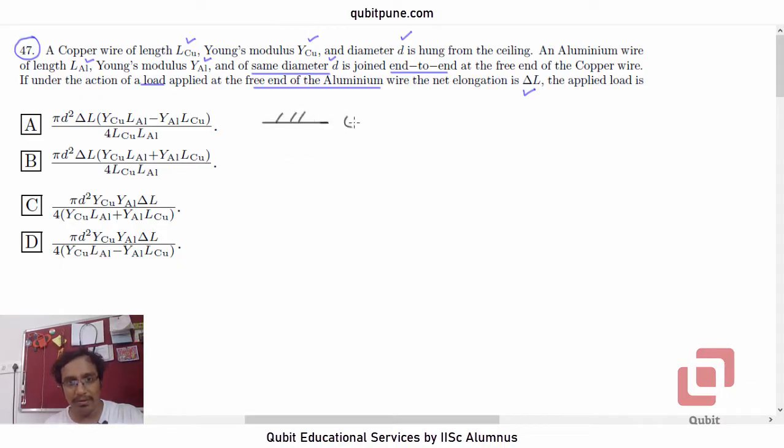Suppose this is the ceiling. Let us use red color for the copper wire and blue color for the aluminum wire. So, this length is L_Cu and this length is L_Al.